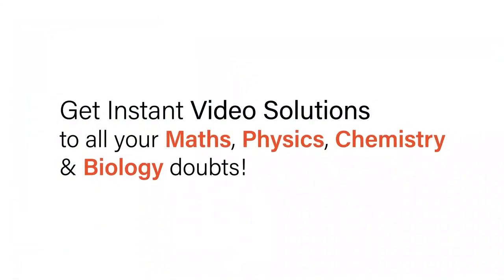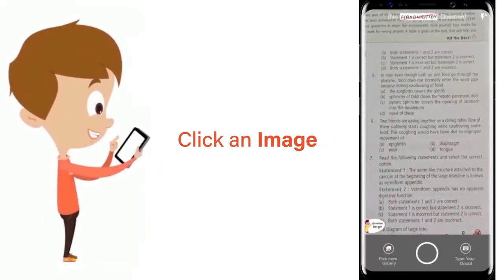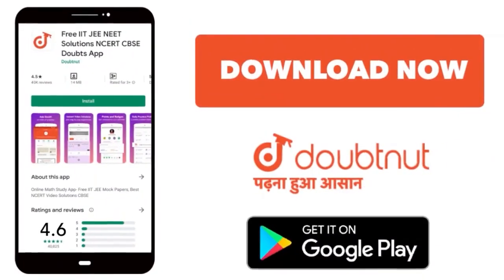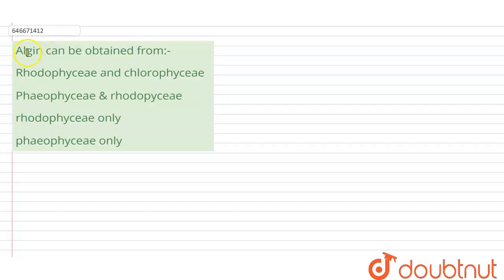With Doubtnut, get instant video solutions to all your maths, physics, chemistry, and biology doubts. Just click the image of the question, crop the question, and get instant video solution. Download Doubtnut app today. Hello students, the question here says algin can be obtained from which of the following.